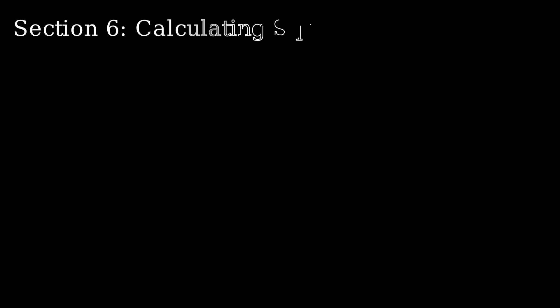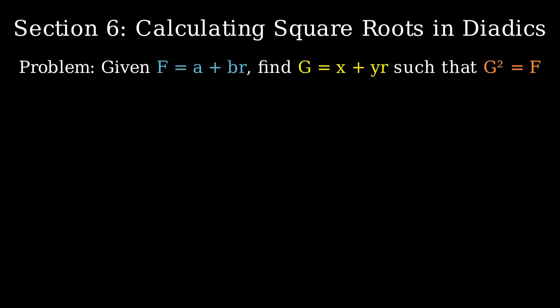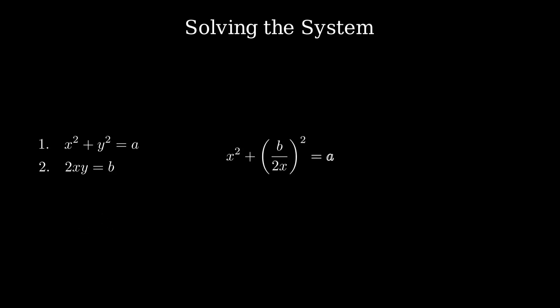Now we ask a deeper question. How can we compute square roots in the dyadic system? Suppose we're given a number f equals a plus b times r. Can we find another dyadic number g, written as x plus y times r, such that g squared equals f? Let's derive the formula. First, we expand g squared. That gives x squared plus 2xyr plus y squared r squared. Since r squared equals 1, this simplifies to x squared plus y squared plus 2xy times r. This must match a plus br, which leads us to two equations: x squared plus y squared equals a, and 2xy equals b.